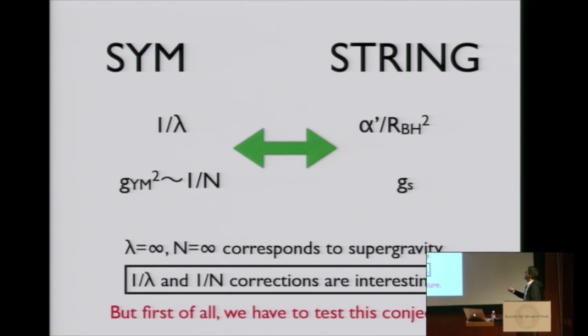In gauge-gravity duality, in super Yang-Mills theory, we have 1/λ (lambda is 't Hooft coupling, gYM² times n) and we have 1/n. We have two expansion parameters. In string theory side, we have α' correction and gs correction. 1/λ correction corresponds to α' correction, and 1/n correction corresponds to gs correction.